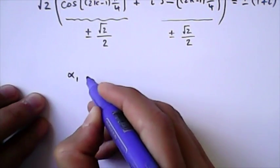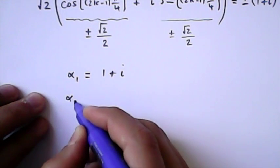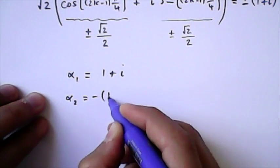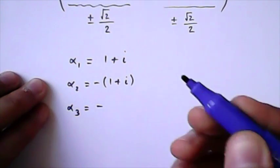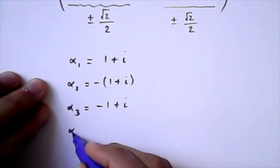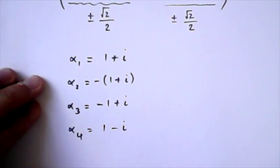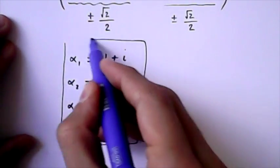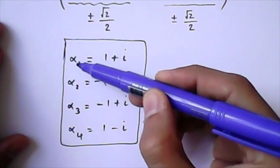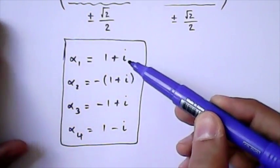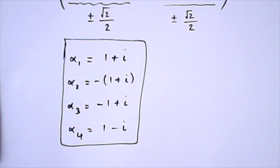So alpha 1, there are four of them. Alpha 1 would be equal to 1 plus i, alpha 2 would become minus 1 plus i, alpha 3, minus 1 plus i, alpha 4, 1 minus i. So that would be the four alphas. You can test that, and you can power each one of these alpha to the four, and you will see that you will end up with minus 4. So we needed that to move on to the next differential equation. Thank you.